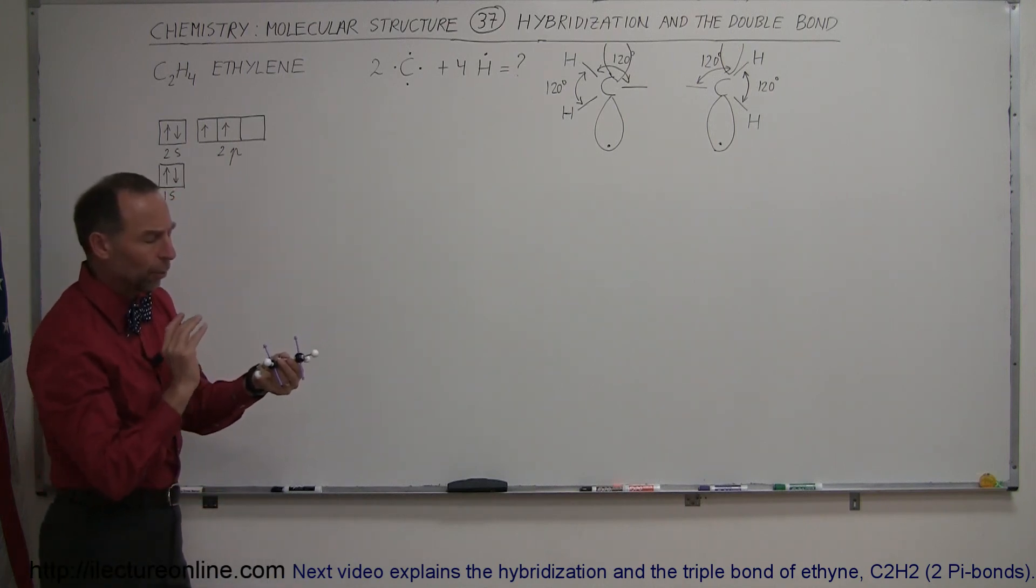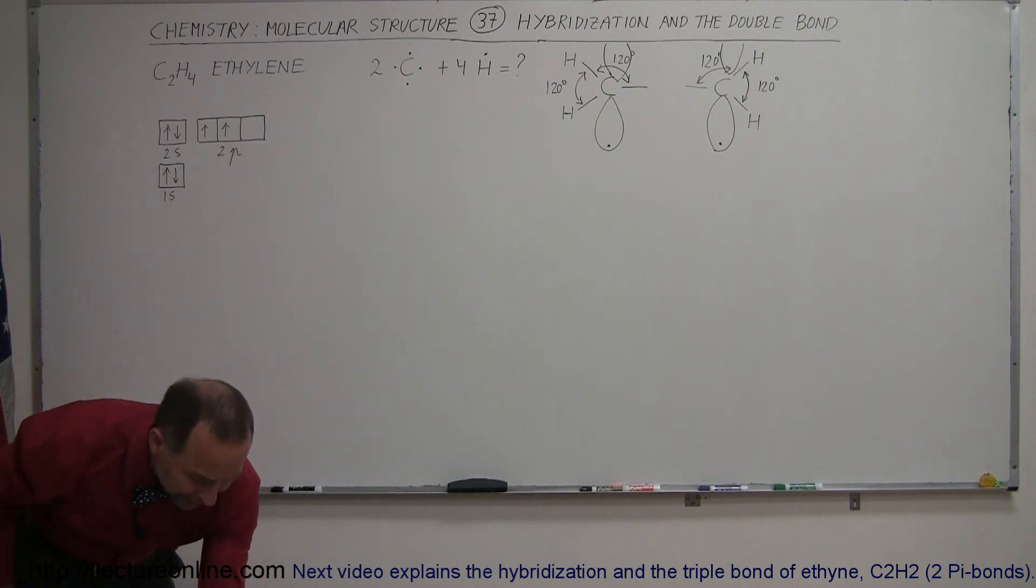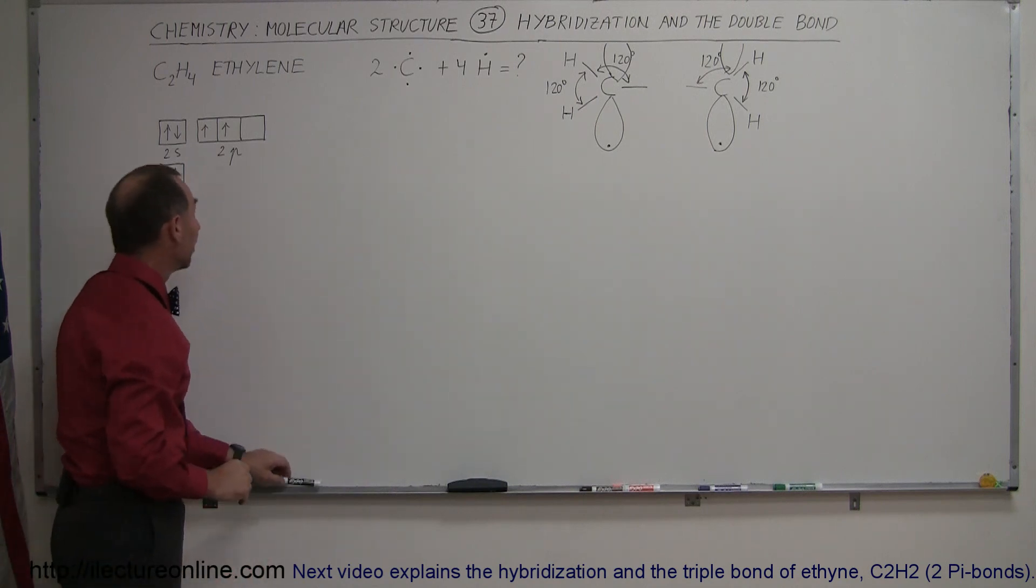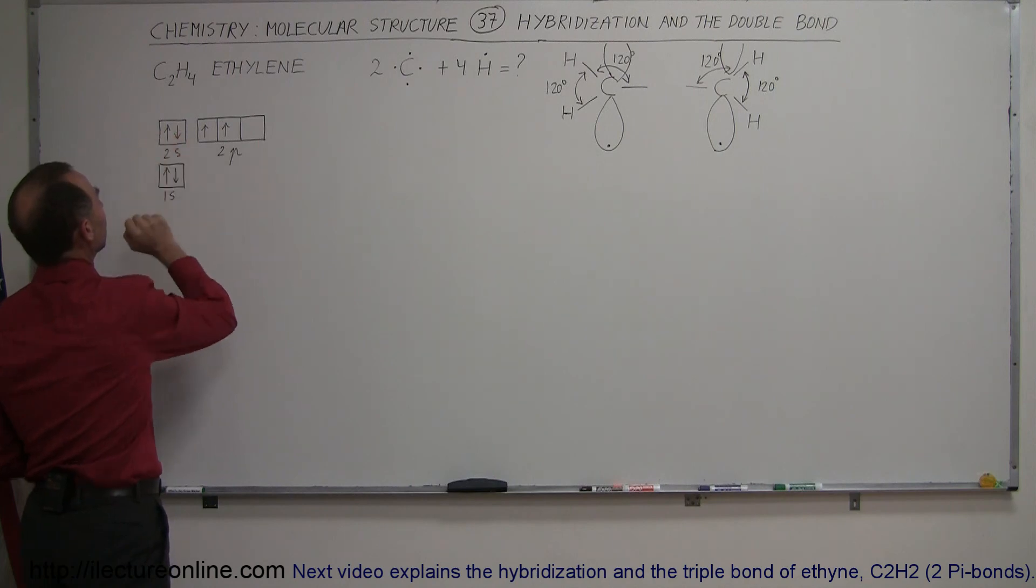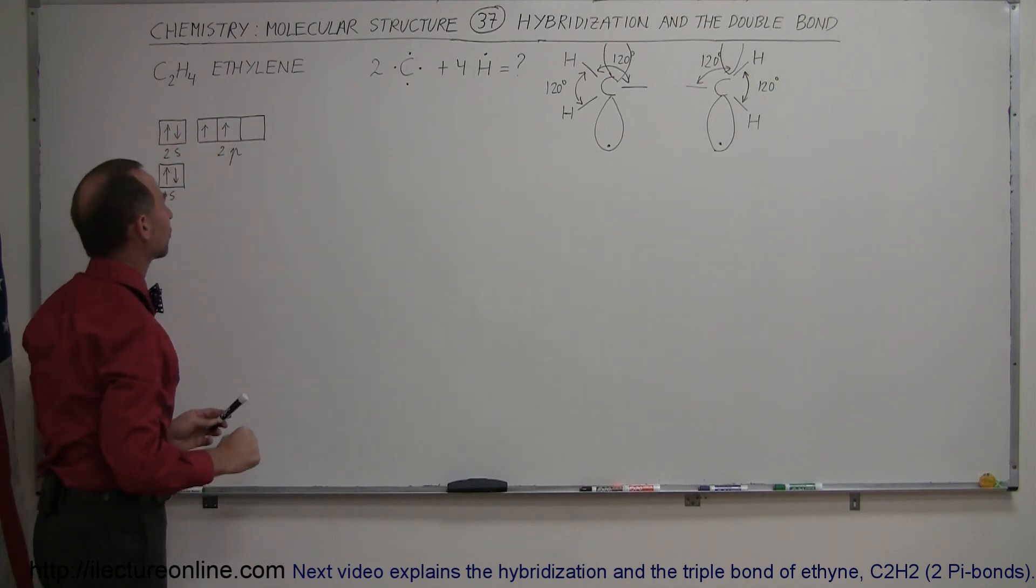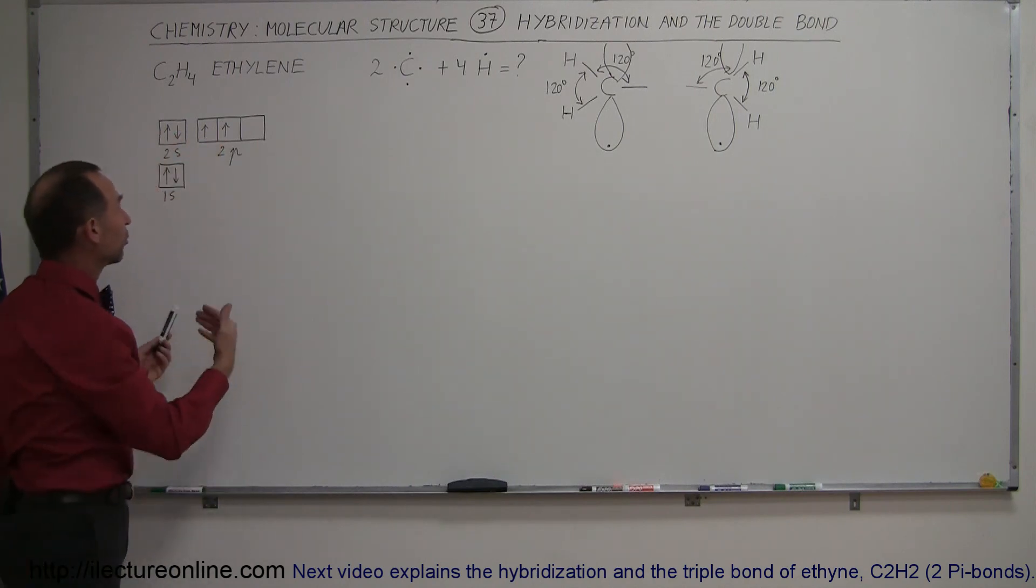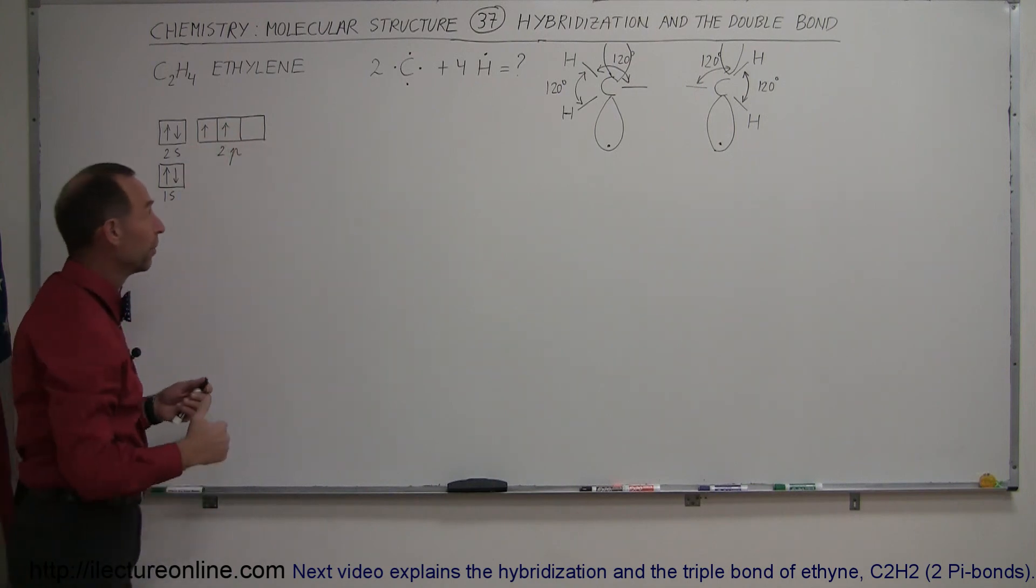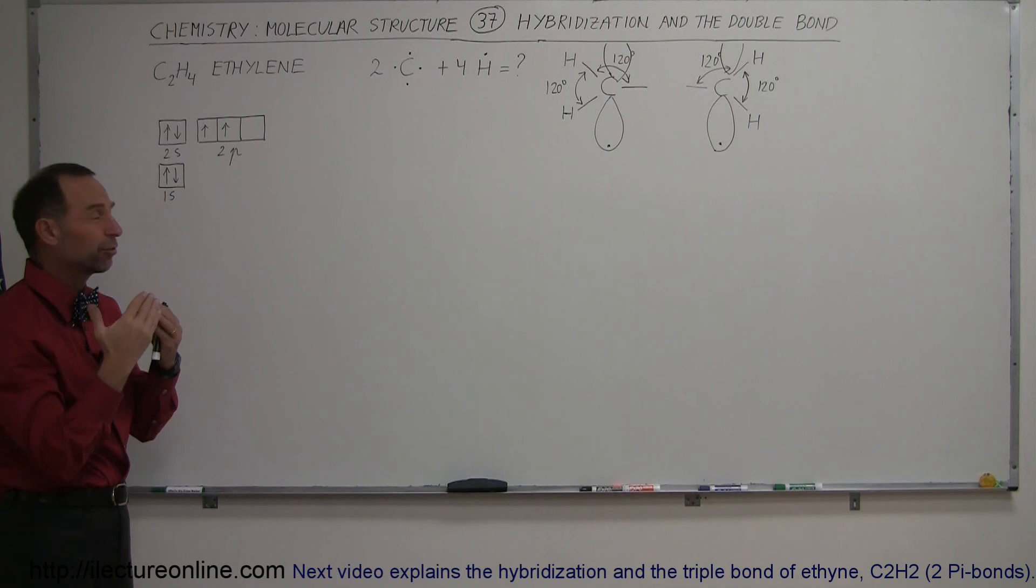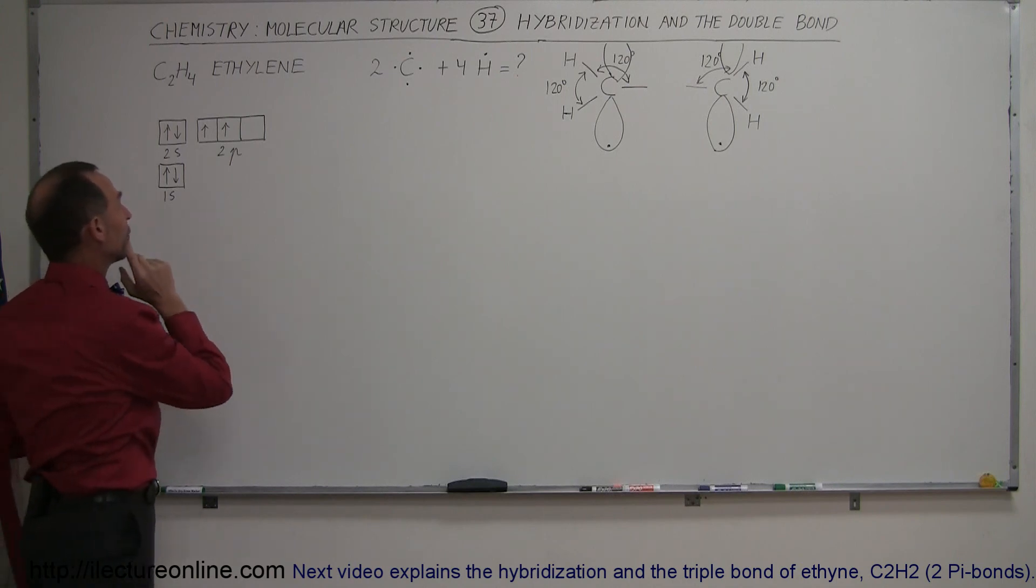And so what we then have to realize is that there is indeed a hybridization taking place from the existing arrangement of the electrons in carbon. We know that we have two electrons in the 1s orbital, two electrons in the 2s orbitals, and two electrons that initially could make bonds here in the p orbitals. But we know that carbon makes four bonds, and so therefore we need a rearrangement of these electrons.